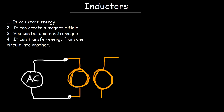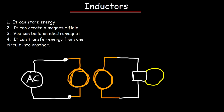Now what we're going to do is create a second coil and place it very close to the first one. Let's attach a light bulb to the second coil. So now, if the AC source is strong enough and the two coils are close to each other,